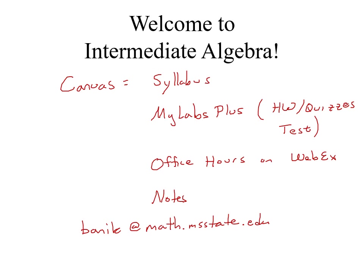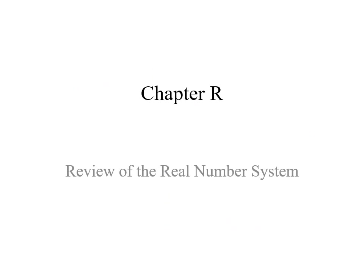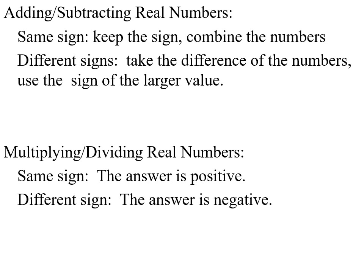With all of that being said, we're going to jump in and do a little bit of algebra. Intermediate algebra starts with chapter R. A lot of this is going to be things that you could basically type in the calculator if you wanted to. We start off with fairly elementary material: adding and subtracting, multiplying, and dividing. If you add or subtract two real numbers and they have the same sign — either both positive or both negative — we keep the sign and combine the numbers.